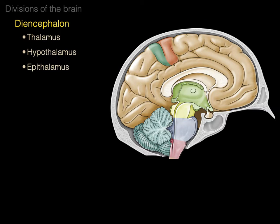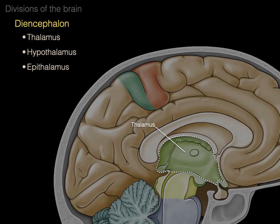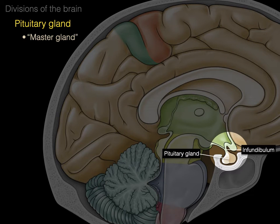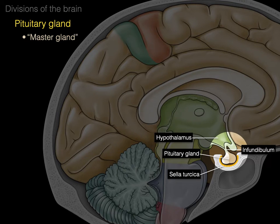The diencephalon consists of the thalamus, hypothalamus, and epithalamus. In this sagittal medial view, the thalamus acts as a gateway for sensory and motor input between the inner brain and the cerebral cortex. The hypothalamus is full of many different nuclei. The epithalamus secretes melatonin and regulates circadian rhythms. The hypothalamus also has a stalk — the infundibulum — connecting to the pituitary gland, which is the master gland. The pituitary gland sits in the sella turcica of the sphenoid bone, and the hypothalamus helps regulate its function and produces some hormones.